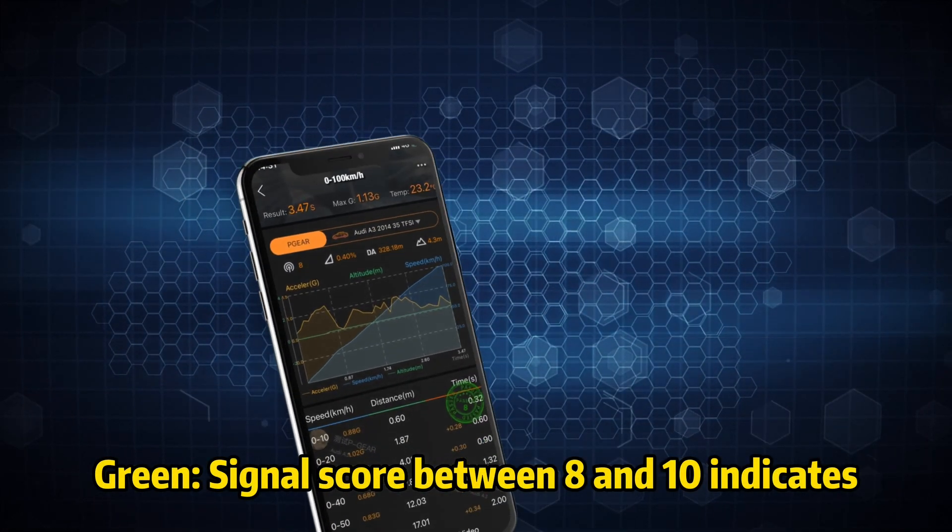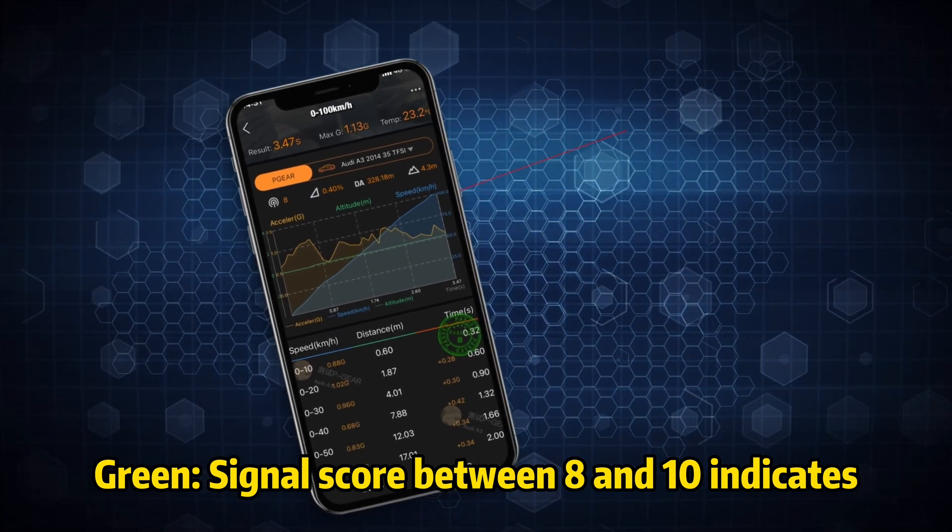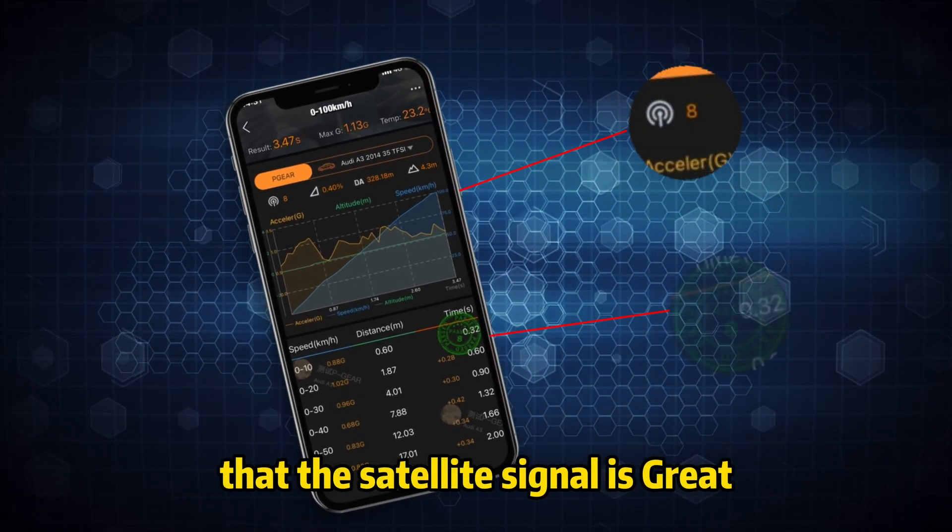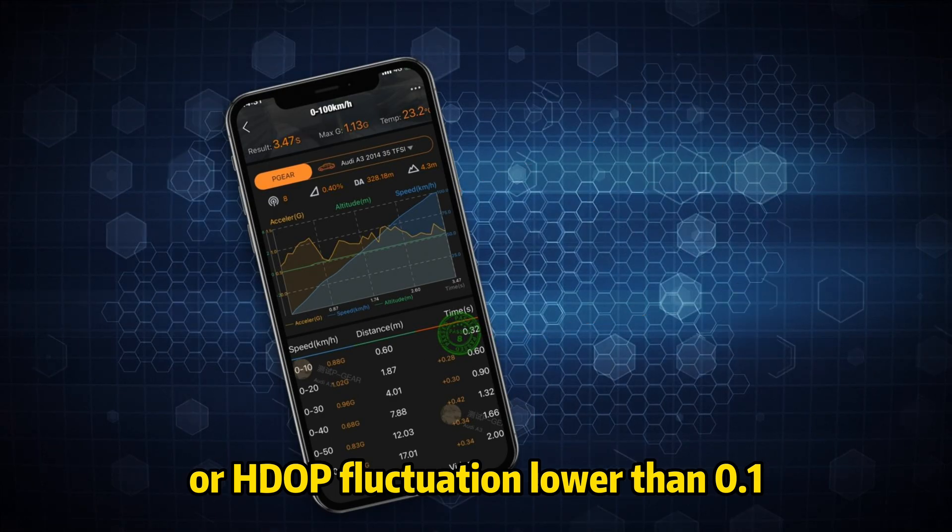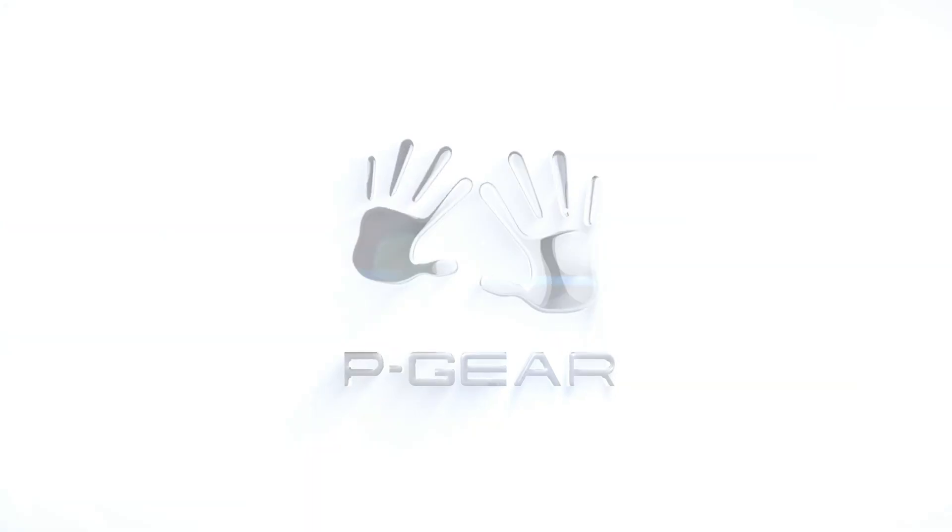Green signal score between 8 and 10 indicates that the satellite signal is great. No packets lost or HDOP lower than 0.9 or HDOP fluctuation lower than 0.1.